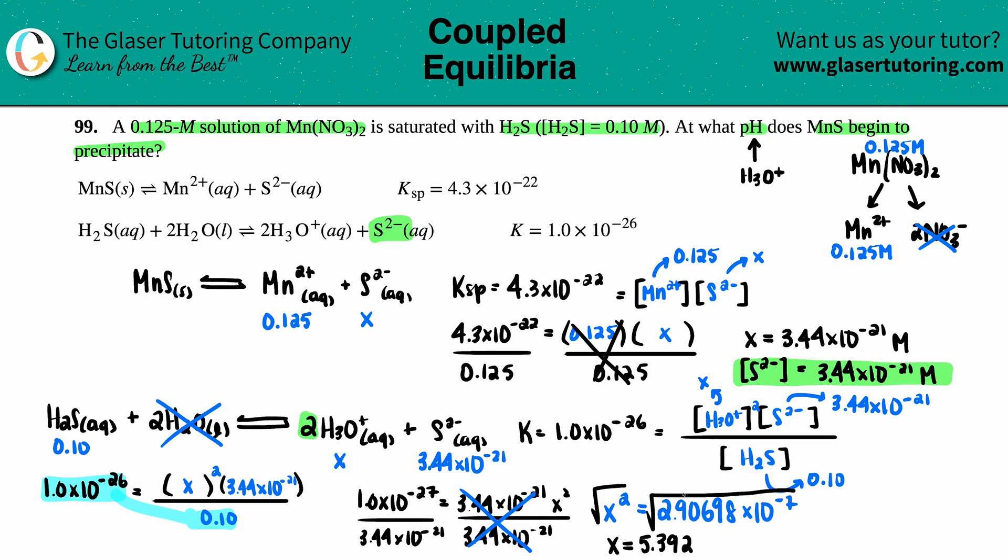So square root of 2.90698 times 10 to the negative 7th. I get X equals 5.392, that's good enough, times 10 to the negative fourth. And that's molarity.